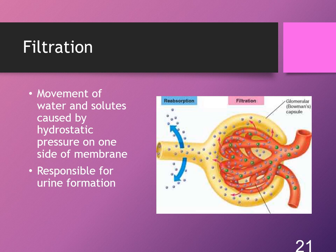A good example of filtration is how urine is formed. In Bowman's capsule, the hydrostatic pressure on the side with the vessels is higher than in the capsule, so fluid and solutes are pushed across the membrane into the capsule to form urine.